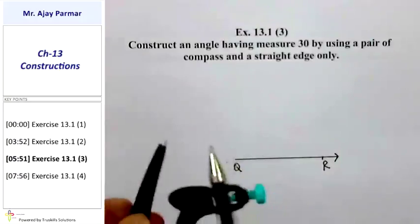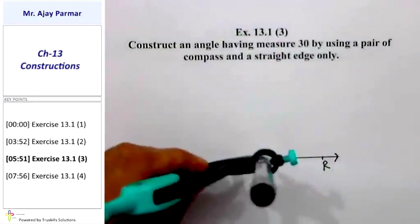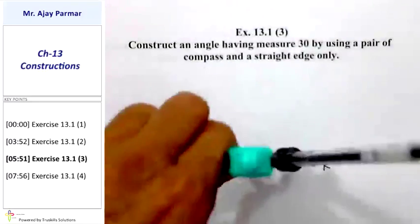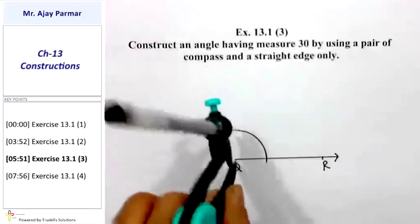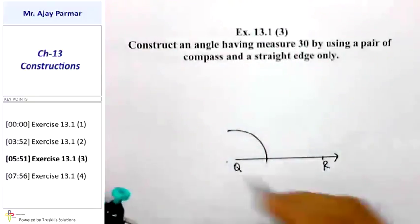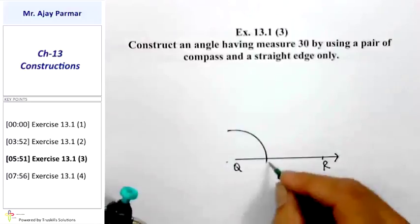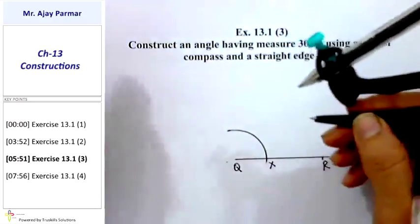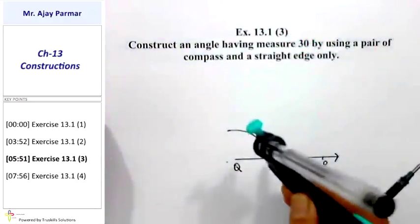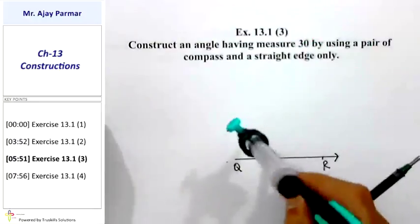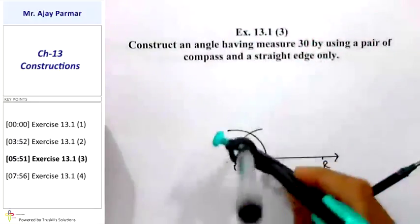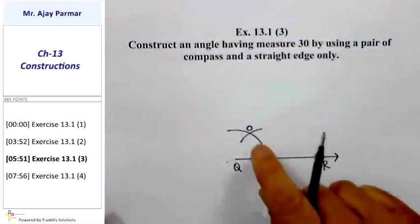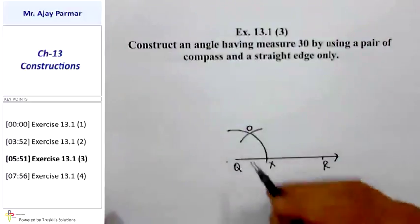Taking any suitable arbitrary radius — but remember it should not be very big — we draw an arc taking Q as the center. That will intersect ray QR at some point, say point X. Now, without changing the radius, taking X as the point I will draw an arc which intersects the original arc at point O. This point O is the point of 60°.